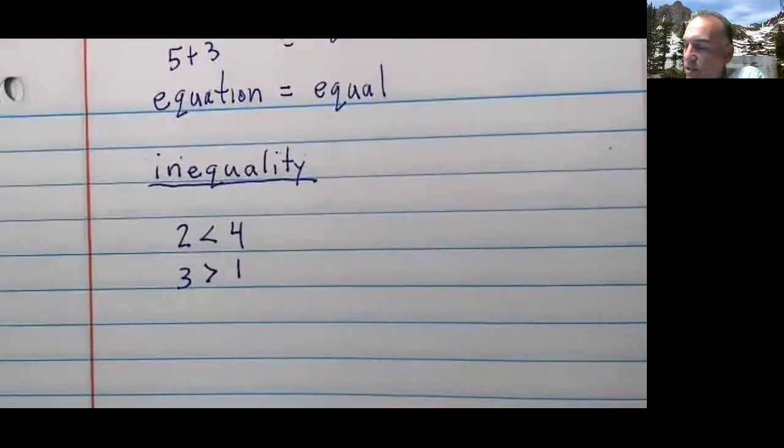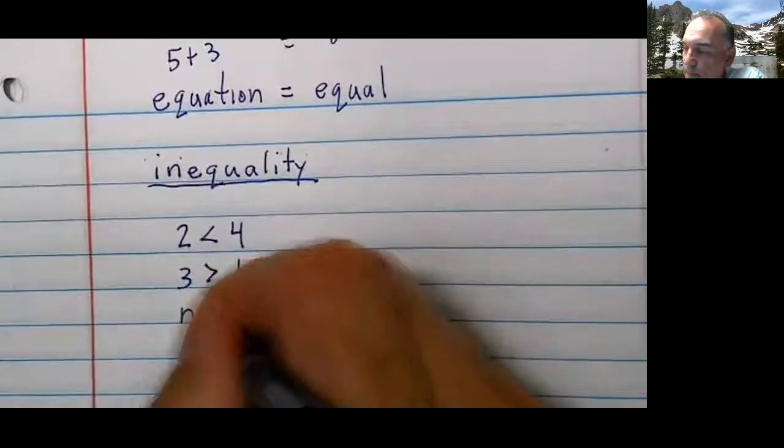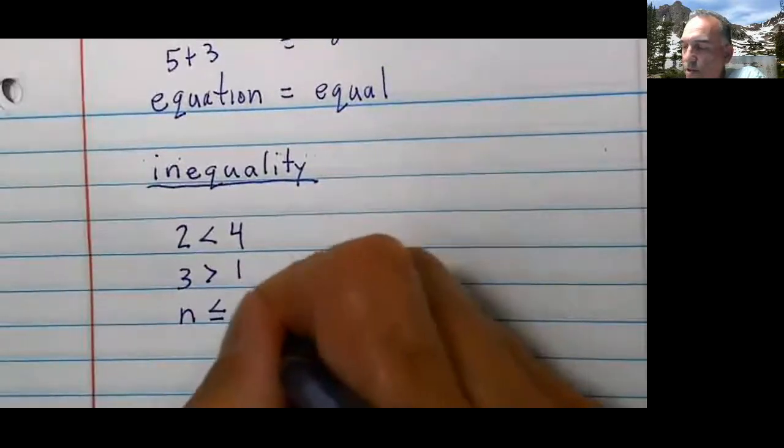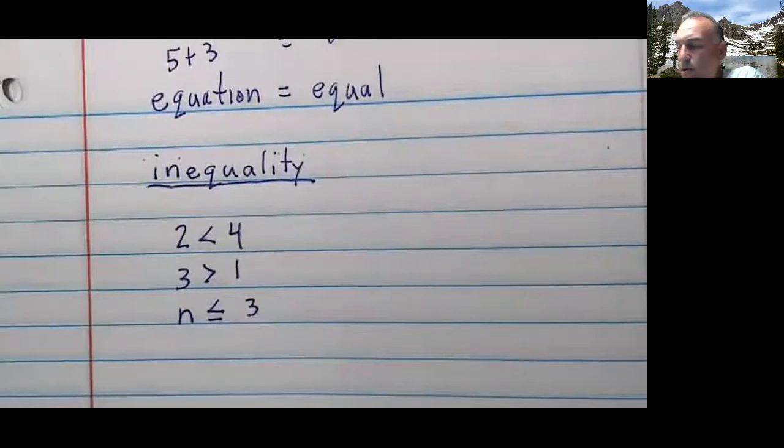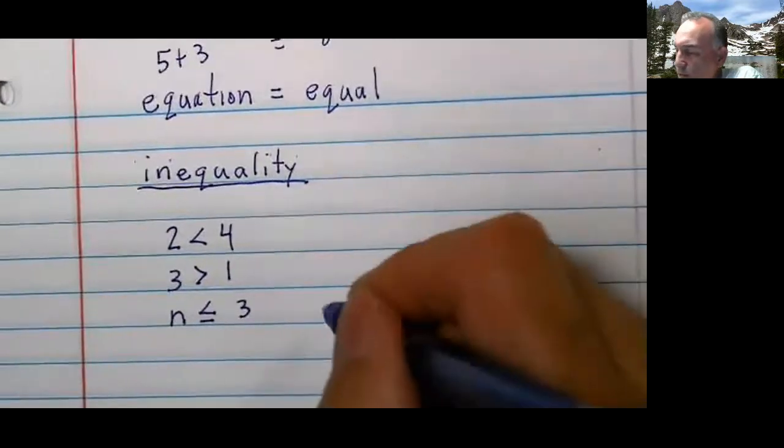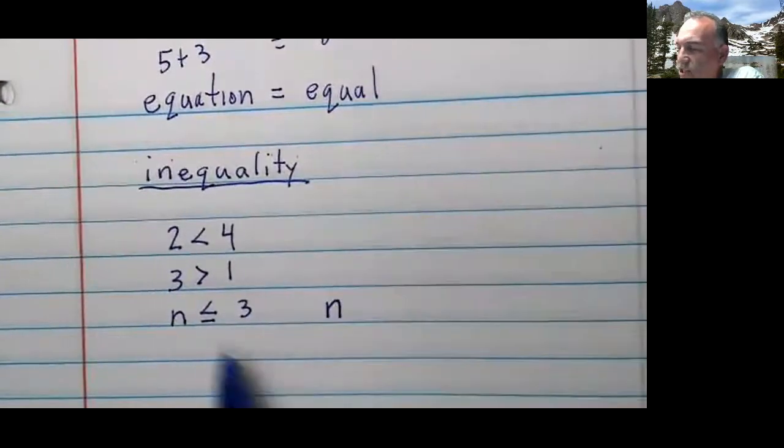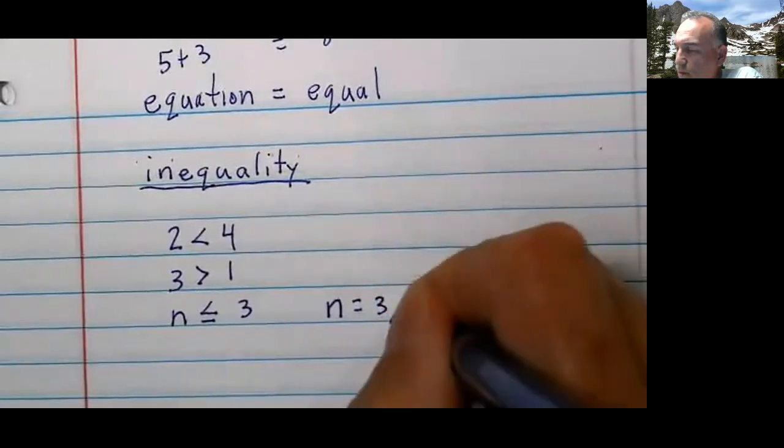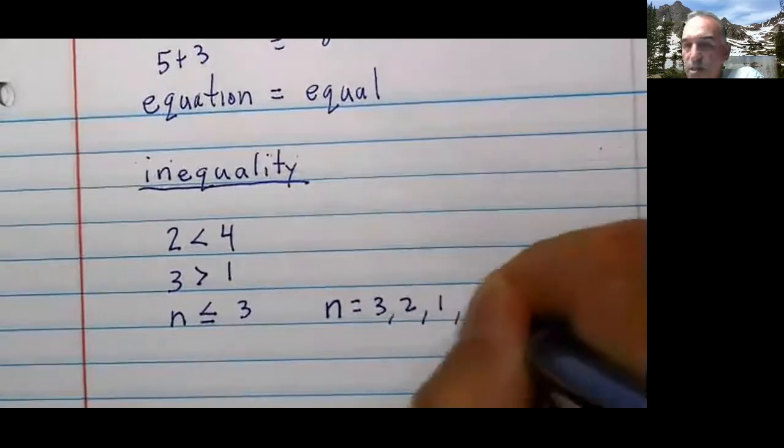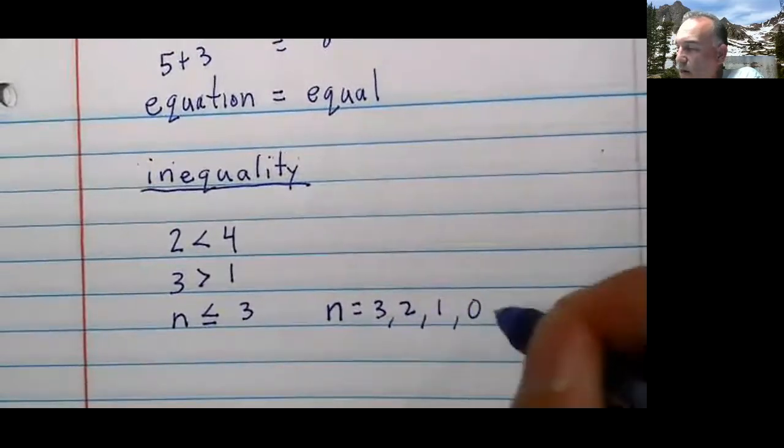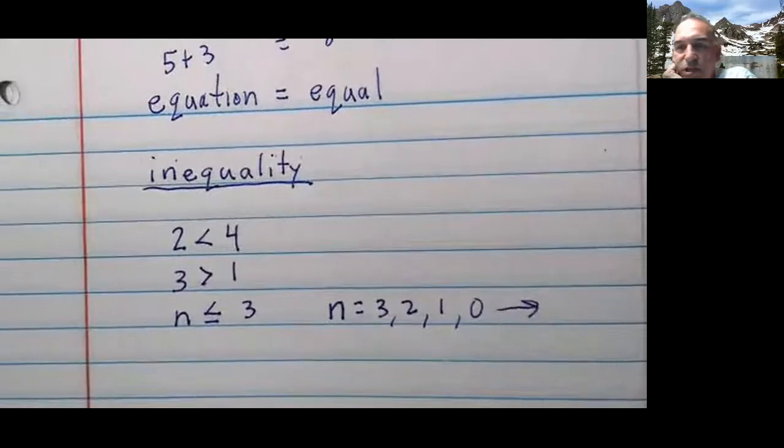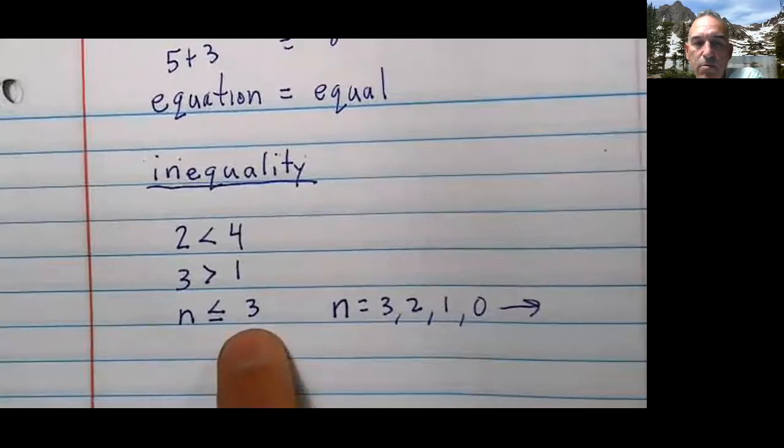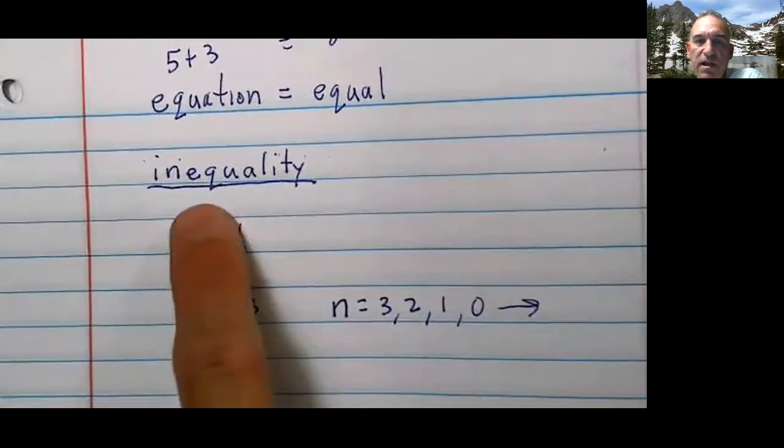How about like this? N is less than or equal to 3. That means it needs to be 3, 2, 1, 0. And if I wanted to get into all the negative numbers, I could keep going negative. But N is less than or equal to, we now start to see the inequalities.